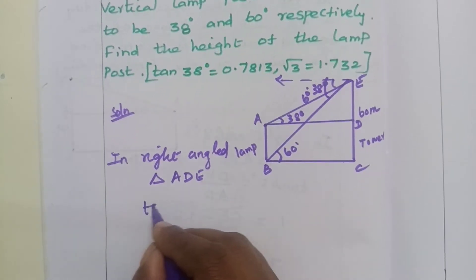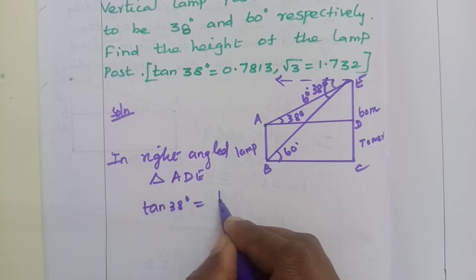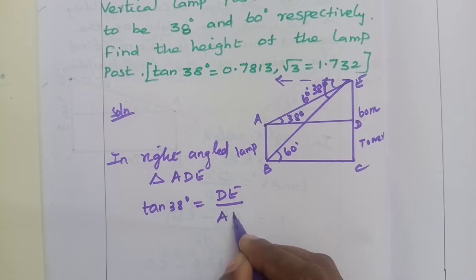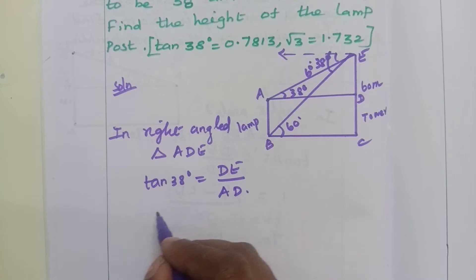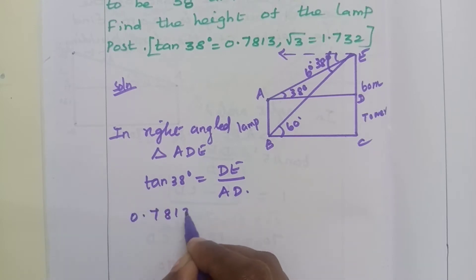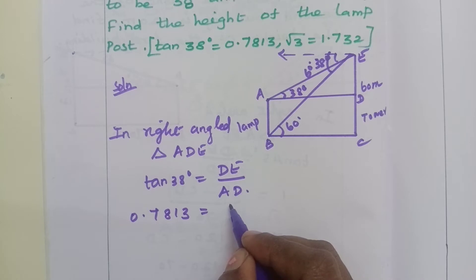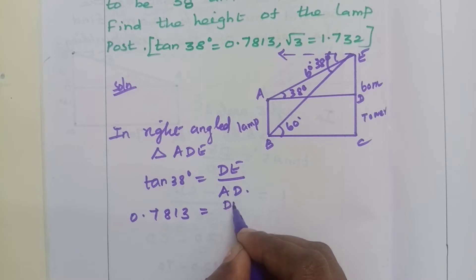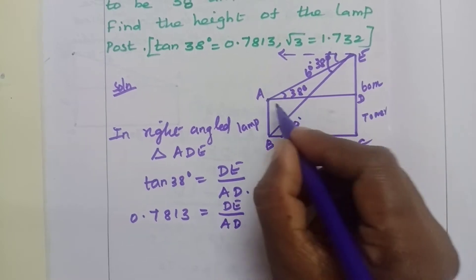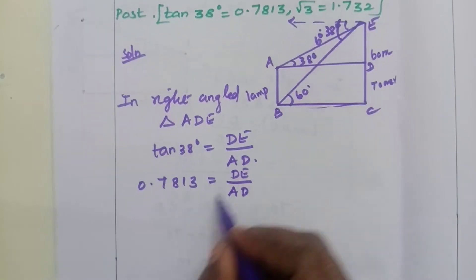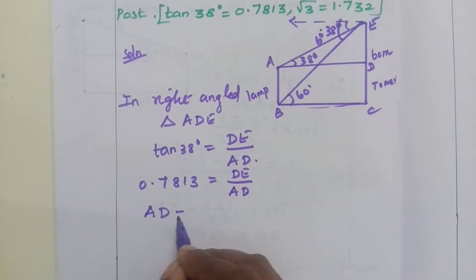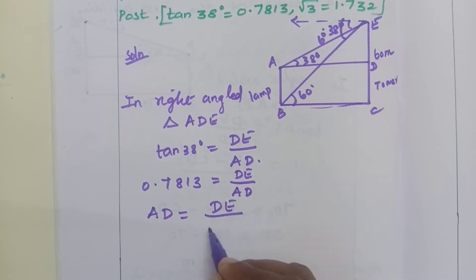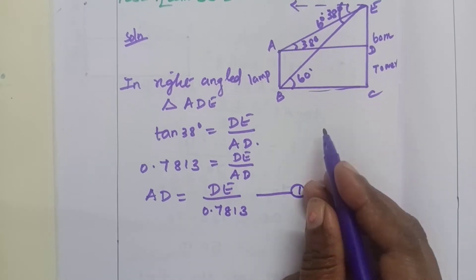Tan 38 degrees equals DE by AD. So tan 38 value 0.7813 equals DE by AD value. So AD equals DE by 0.7813. This is Equation number 1.